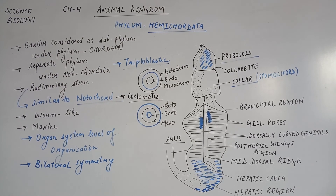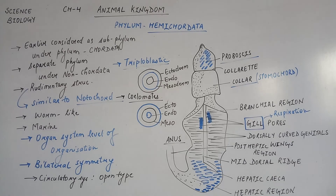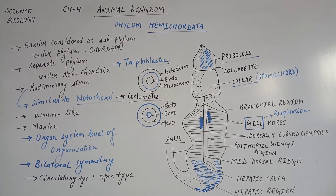The body is cylindrical with a Proboscis present in the anterior part. As you can see in the diagram, there is a collar portion and a very long elongated trunk portion. So these three portions - Proboscis, Collar, and Trunk region - are distinguished. Blood circulation is not in arteries and veins; we call this an Open type circulatory system. Respiration occurs with the help of Gills, as you can see the gills present in the diagram.